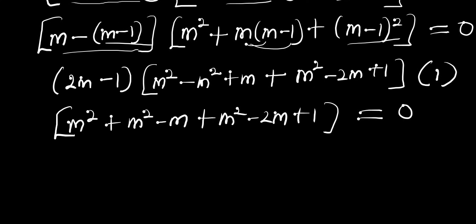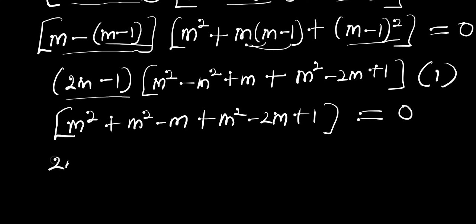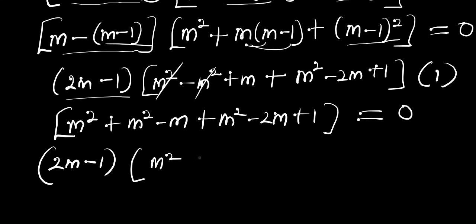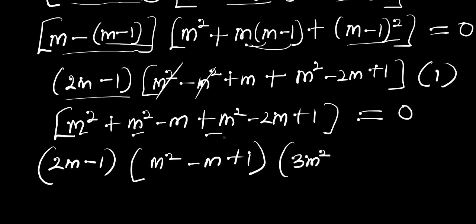Simplifying the second quadratic: m² minus m² cancels, then m² plus m² minus 2m gives negative m, combined with the remaining terms we get 3m² minus 3m plus 1 equals 0. So now we have three separate equations from the factored form.